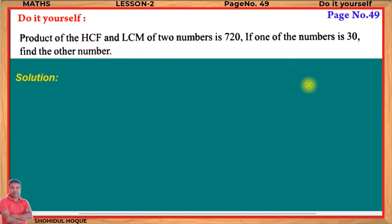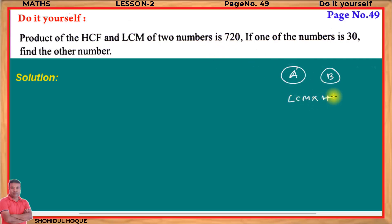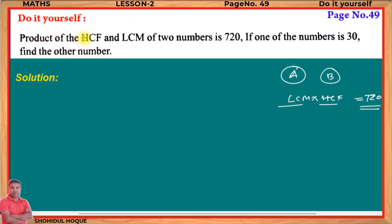Let us take the two numbers as a and b. Their LCM and HCF are given. The product of these two values — that is, LCM multiplied by HCF — gives 720. So, the product of HCF and LCM of the two numbers equals 720.